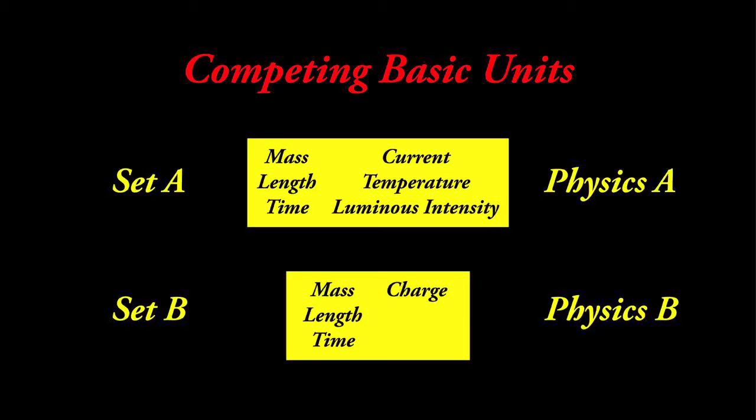Here's something else that is critical. Because basic units are definitions, a new definition for a basic unit would not be right or wrong. A new definition would only be different. Imagine two competing sets of basic units, set A and set B. This would imply that there are two types of physics, physics A and physics B.